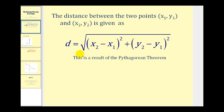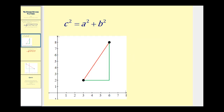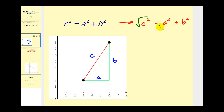Even though this formula looks quite different from the Pythagorean theorem, it is a result of the Pythagorean theorem. We know if we have a right triangle that c squared is equal to a squared plus b squared, where c would be the length of the hypotenuse and a and b would be the lengths of the two legs. If we wanted to determine the length of hypotenuse c, we could solve for c by taking the square root of both sides, so c equals the square root of a squared plus b squared.